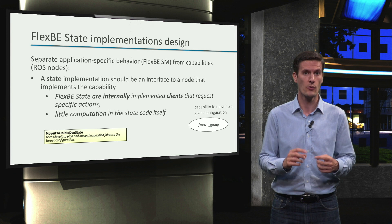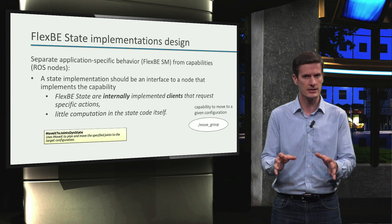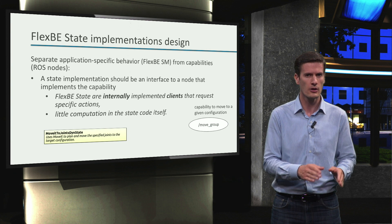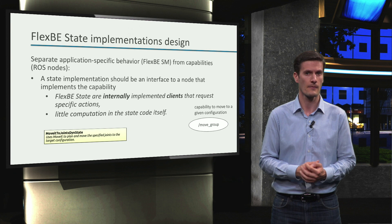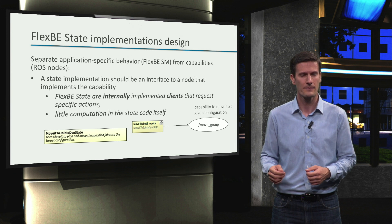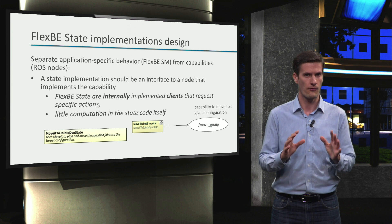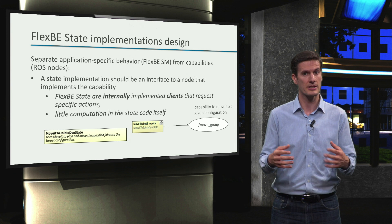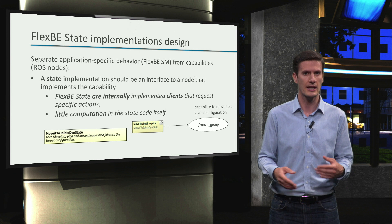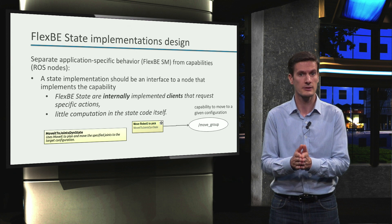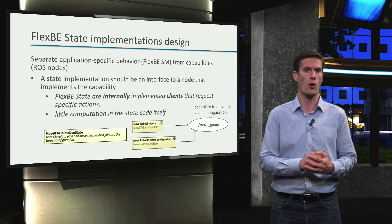This is exactly what the MoveItToJointDynState implementation that we have used is. It is basically an action client that sends a goal with the joint configuration to the move_group node and monitors the result of the execution. In our 'move robot1 to pick' state, a concrete goal is sent with the joint configuration computed for grasping. Following this design principle, the capabilities remain generic and can be used multiple times in our state machine. For example, in our state machine we use another state of the class MoveItToJointDynState — this time to send the robot a goal to move to the robot1 home configuration.